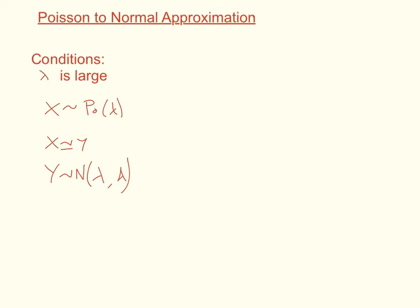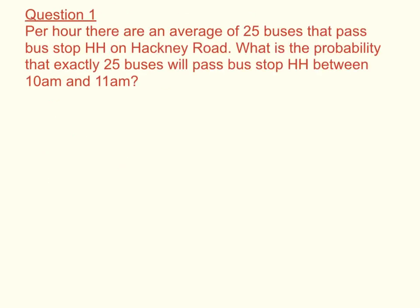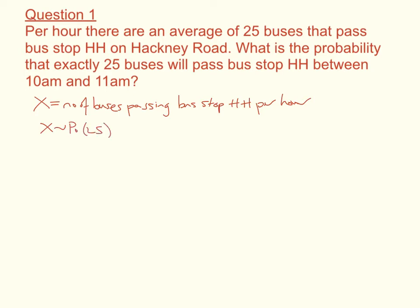Let's now have a look at a couple of questions where we do the normal approximation to something that has a Poisson distribution. Question one: per hour, there are an average of 25 buses that pass bus stop HH on Hackney Road. What is the probability that exactly 25 buses will pass bus stop HH between 10am and 11am? We need to define our random variable: x is the number of buses passing bus stop HH per hour, so x has a Poisson distribution of 25. We can see that we're able to do a normal approximation because lambda is large.